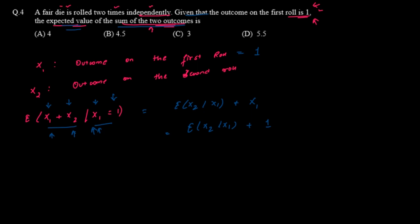Since the die is rolled two times independently, any value of X1 does not affect the value of X2. So the given condition on X1 can be dropped, and we simply have E[X2] + 1.